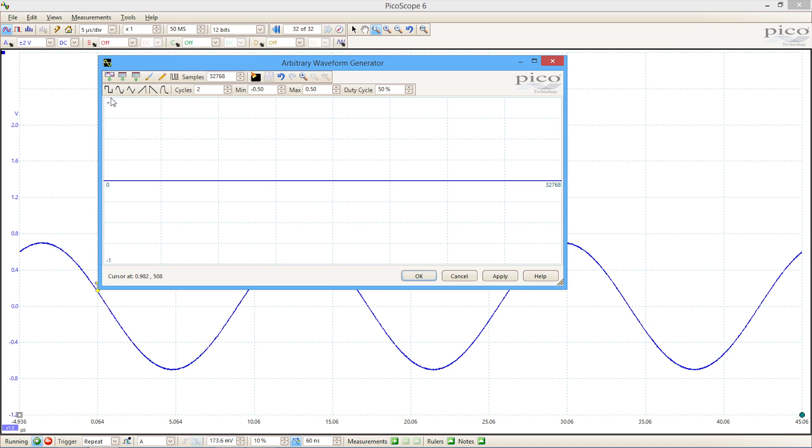And then I can select, if I wish, from a number of standard waveforms, or I could import data from a CSV file. So if I created a waveform using something like MATLAB or some other application, I could import that data from MATLAB. Or I could import data from one of the scope channels. So if I've captured a signal from the device under test and I want to replay that waveform time and time again, then I can do so in that way.